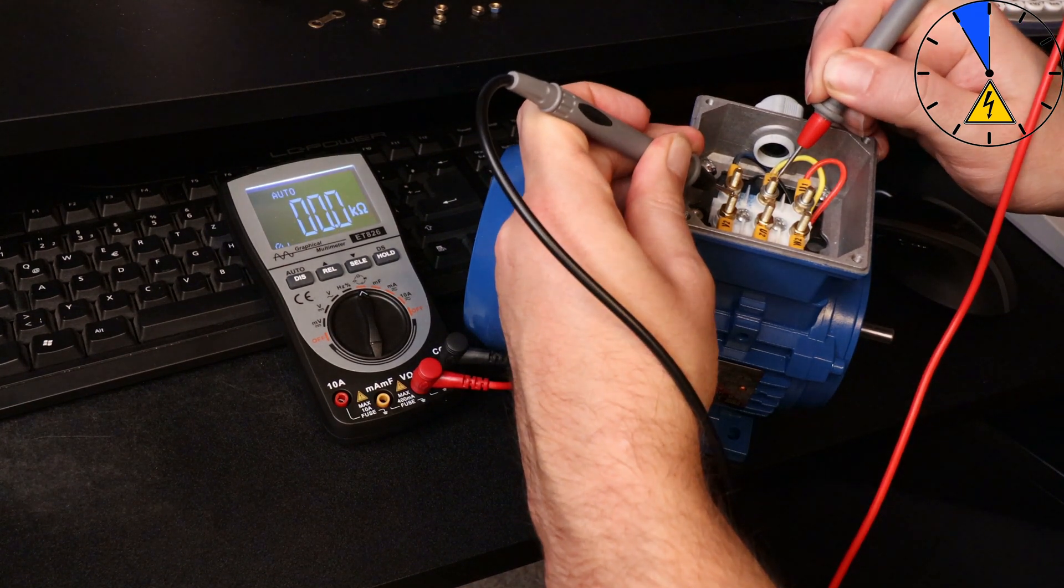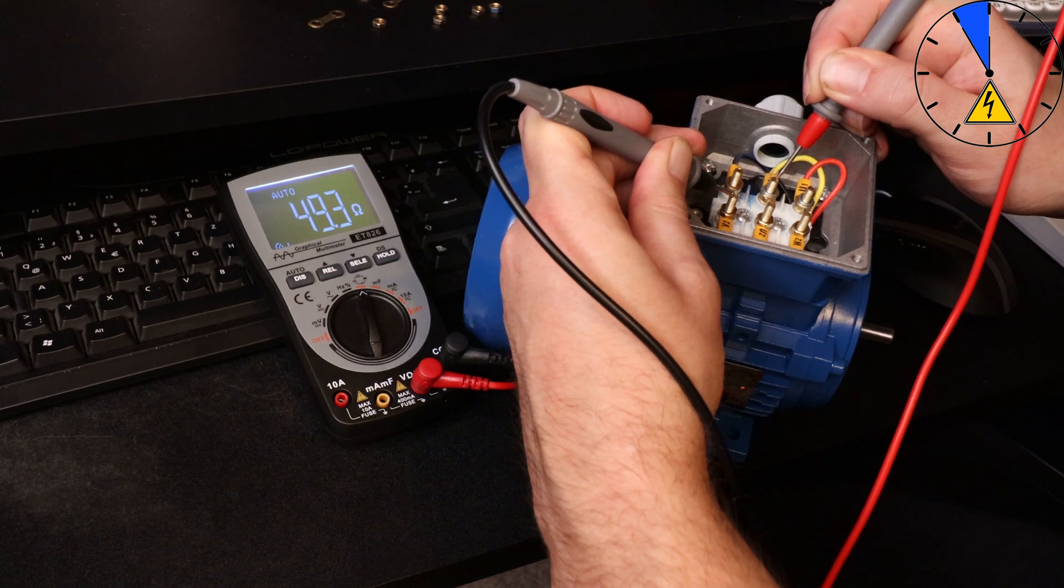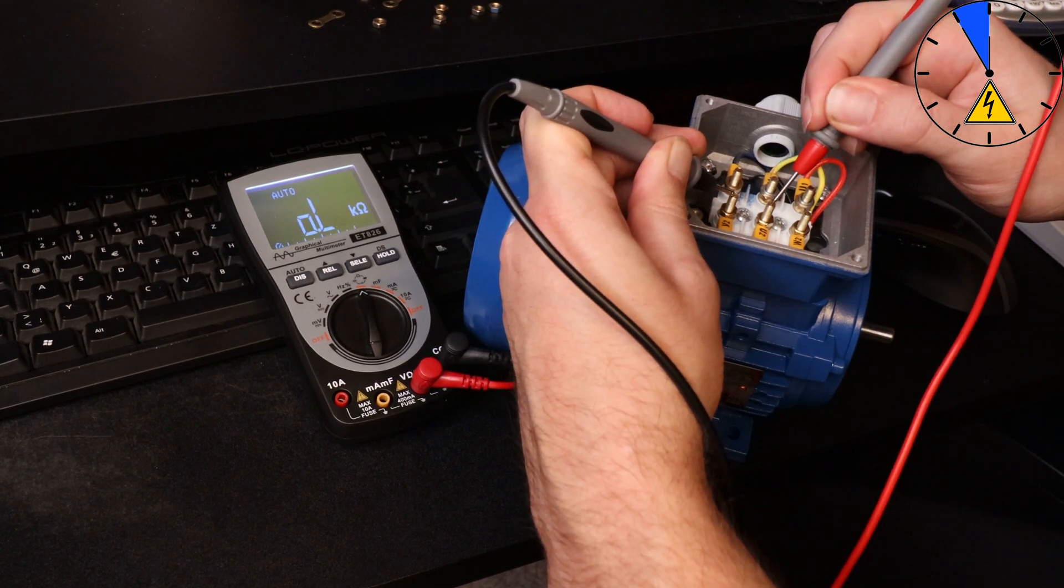There must be 49 ohm. That is exactly. Then to U2, there must be zero.